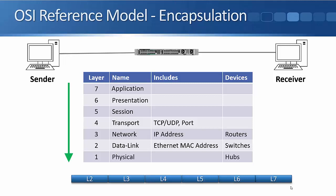Finally, the packet gets put onto the physical wire — that's at the physical layer. Hubs work at the physical layer, though we don't really use hubs anymore.